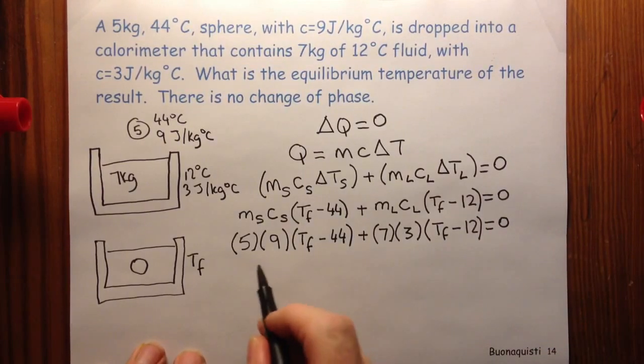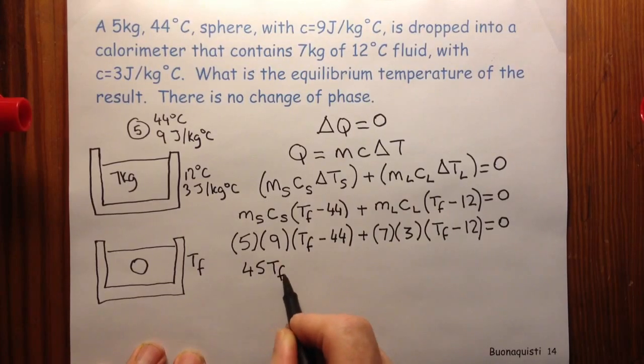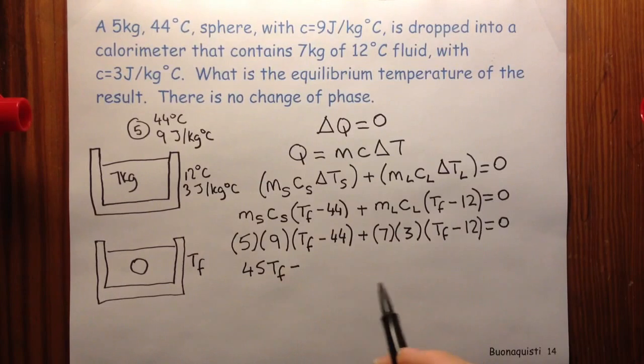Well, 5 nines of 45. So this is 45 times Tf. And we've got to subtract from that 5 nines of 45.